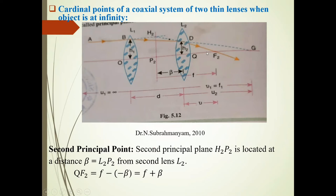Then if we produce this in backward direction, this is DF2. And if we produce this AB ray in forward direction, they will meet at H2 point. H2P2 is second principal plane.